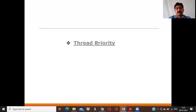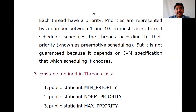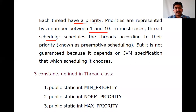Each thread has some sort of priority — who will execute first, who will get the next priority. Priorities in Java are represented in the range 1 to 10. The Thread Scheduler selects threads based on their priority. Whichever thread has the highest priority value, that will be picked by the Thread Scheduler for execution.